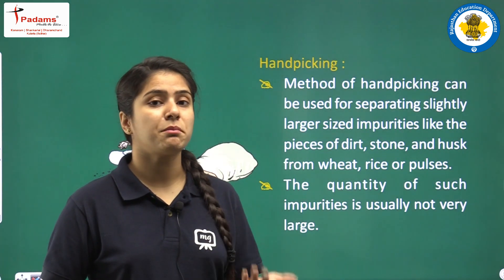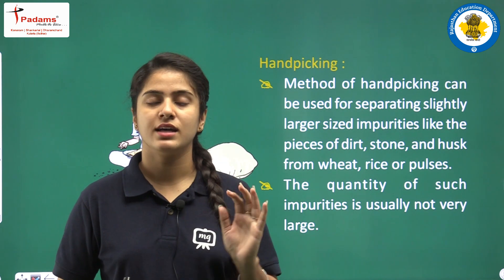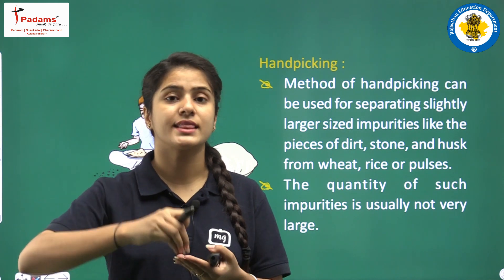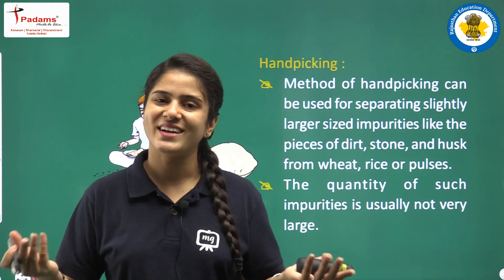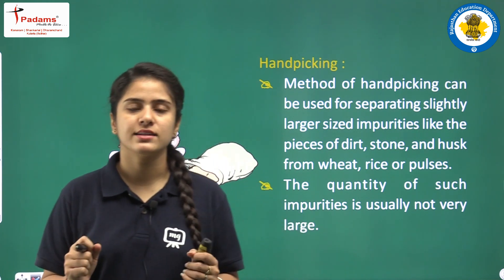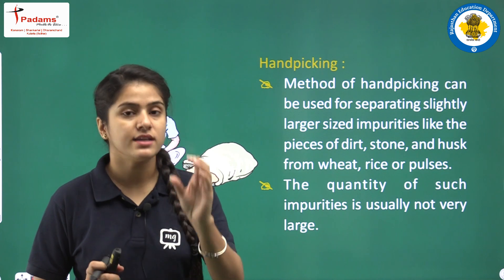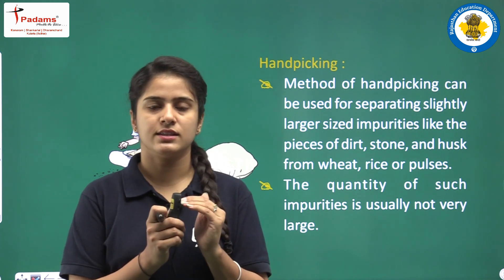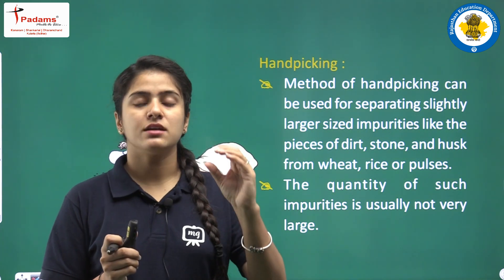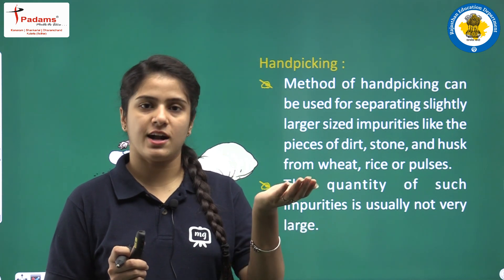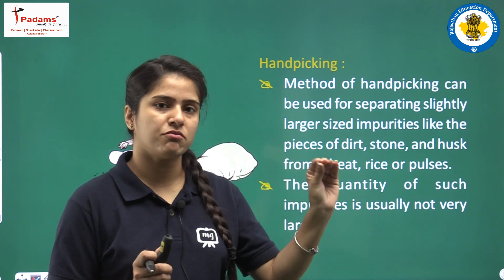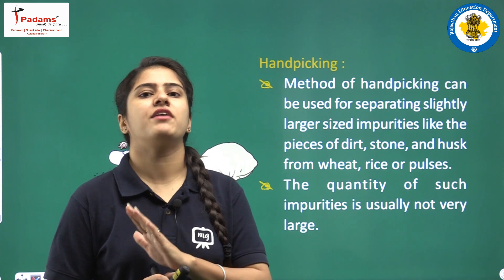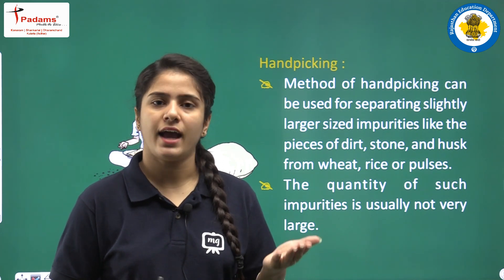What do we mean by hand picking? It is very clear from its name — hand picking means picking the substances we want to separate with the help of our hands. In this method we are separating the components of a mixture with our hands. You should keep in mind that the impurities are of larger size, and the quantity of impurities is not very large.